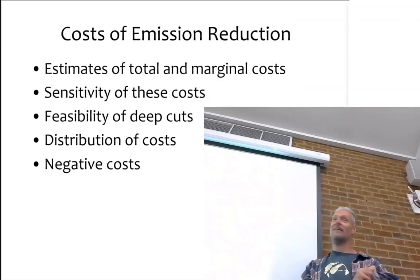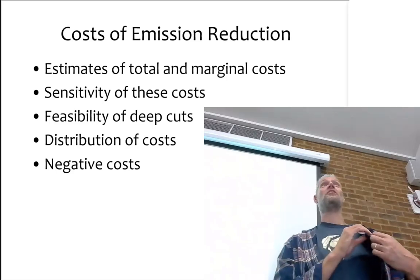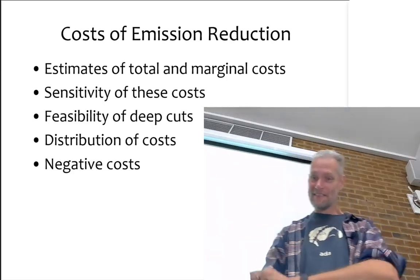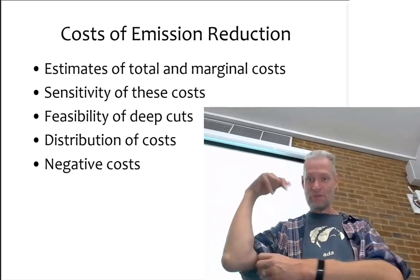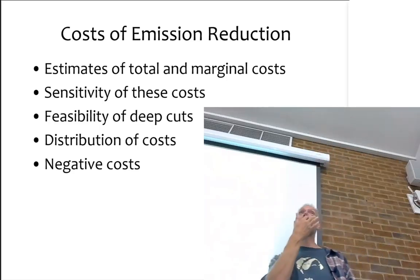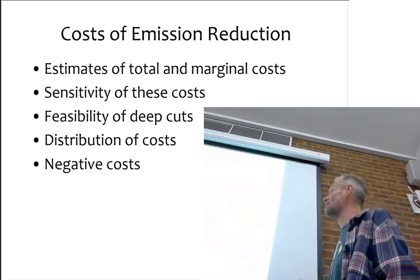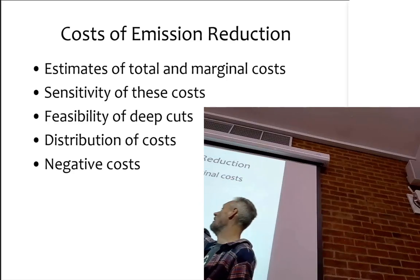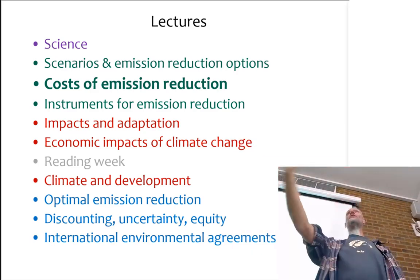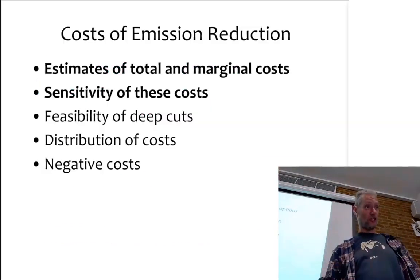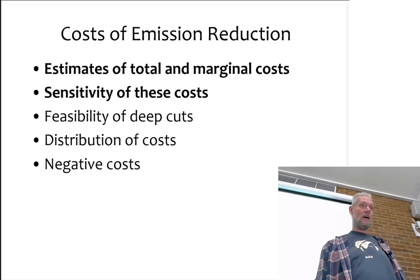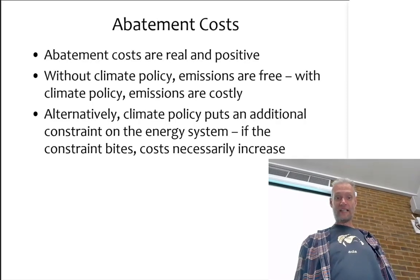Before the break I talked about technical options for greenhouse gas emission reduction — mostly CO₂. Similar stories exist for methane and nitrous oxide but would not add new insights. Now I'm going to talk about the costs of doing so — both the total and marginal costs, and some estimates of why these are as they are.